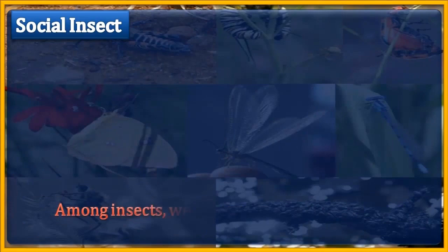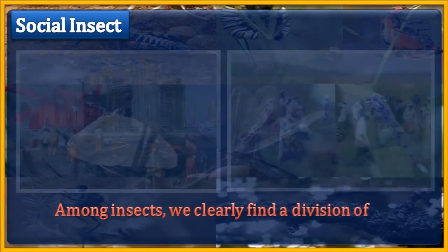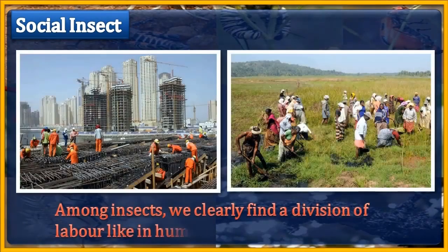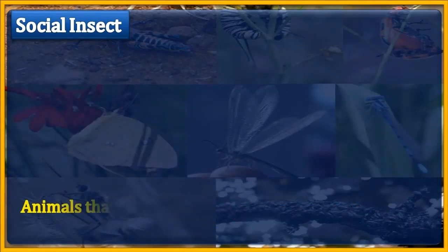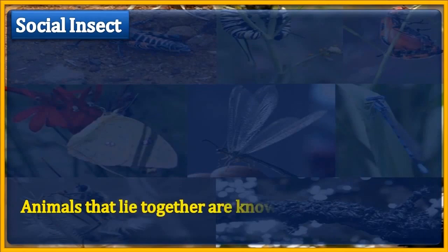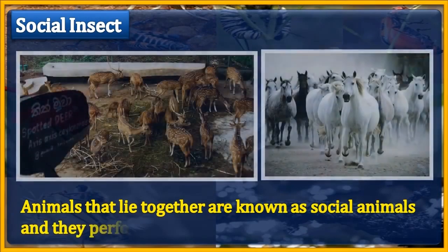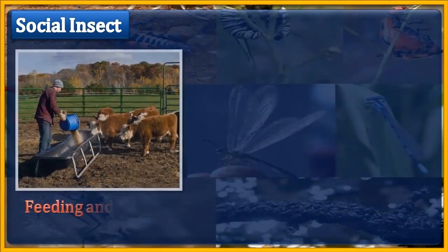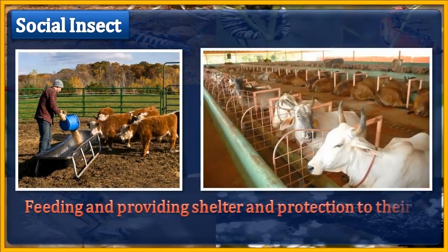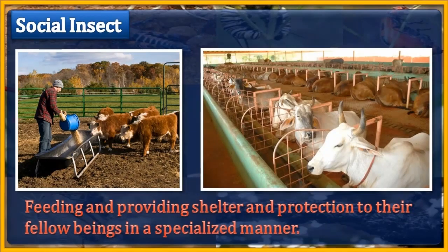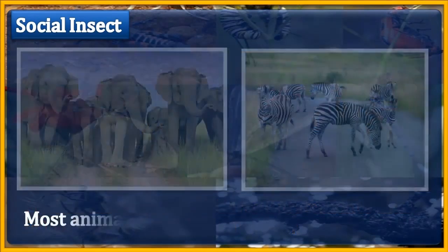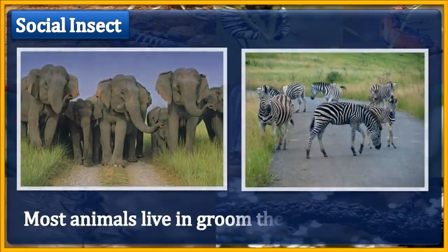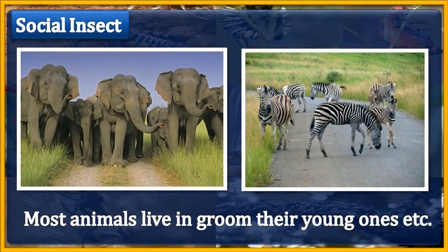Among insects we clearly find a division of labor, like in human beings. Animals that live together are known as social animals, and they perform a number of activities such as feeding and providing shelter and protection to their fellow beings in a specialized manner. Most animals also live and groom their young ones.